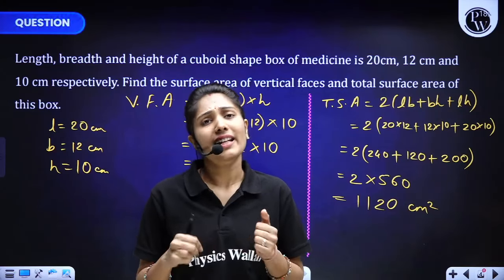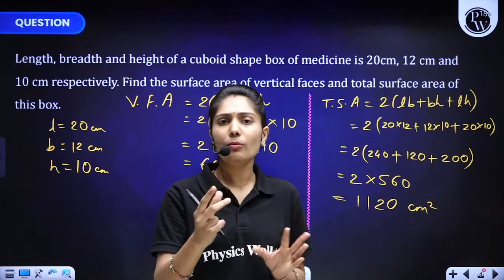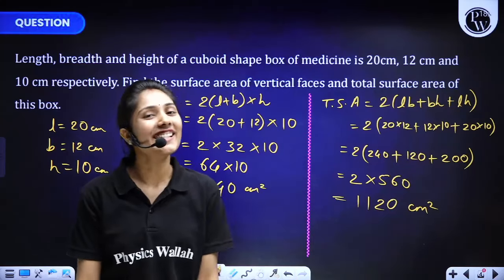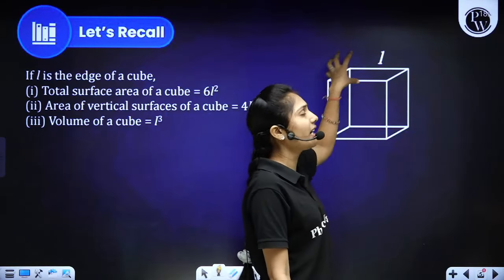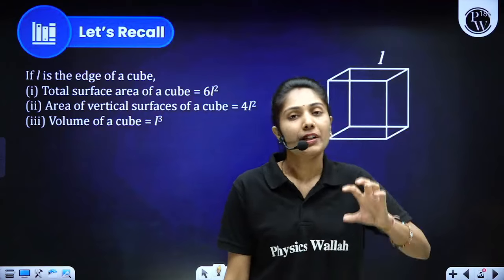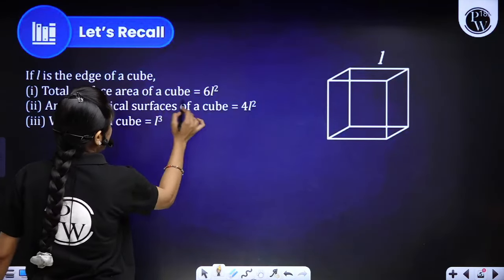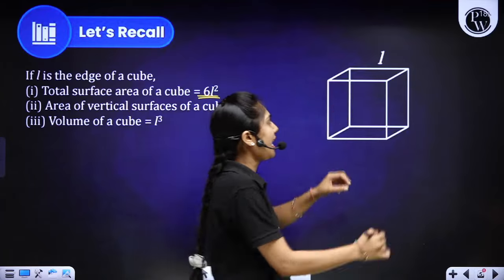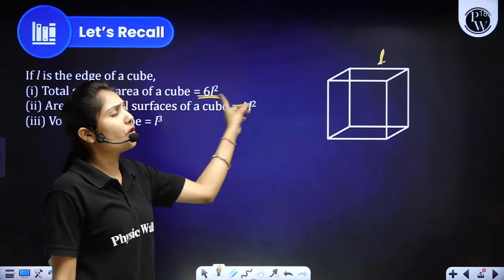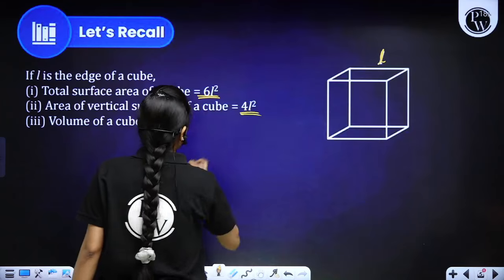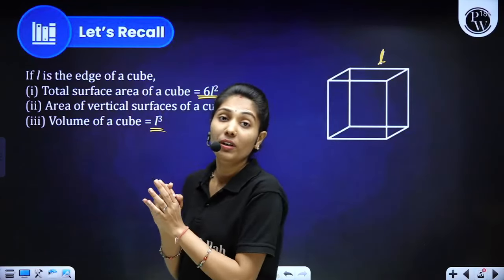Next is about cube. Every face of a cube is a square, while every face of a cuboid is a rectangle. For a cube: total surface area = 6L², area of vertical surfaces = 4L², and volume = L³, where L is the edge (side length). These are the three formulas for cube.